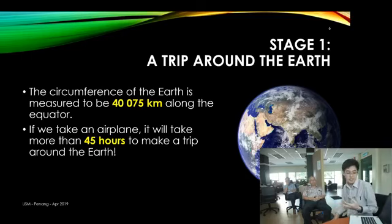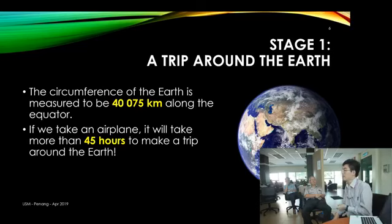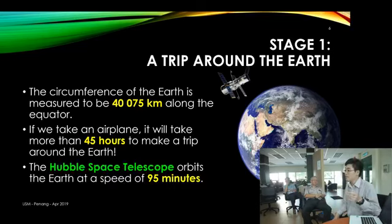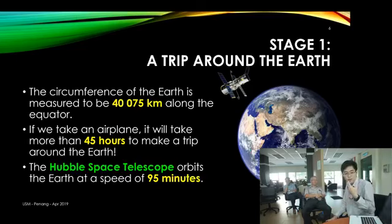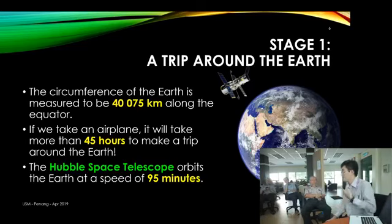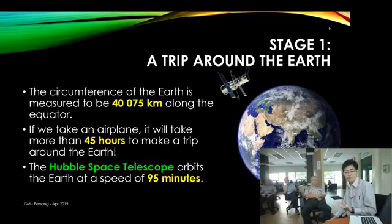That's not the fastest way to travel around. The Hubble Space Telescope orbiting around the Earth can literally orbit the Earth in 95 minutes. So within one and a half hours, the Hubble Telescope can just go around the entire Earth. How can it do so? Because it's orbiting so far up in the atmosphere, there's no resistance, and based on your Newtonian mechanics, you can actually measure how fast this telescope is going around the Earth.